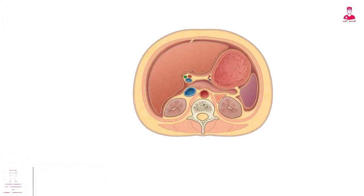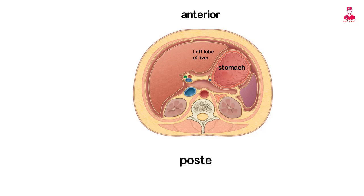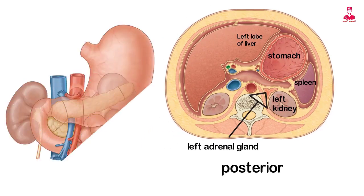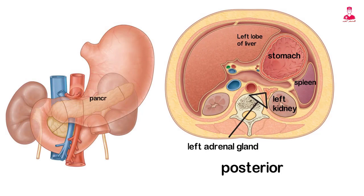The anterior surface is in contact with the diaphragm, anterior abdominal wall, and left lobe of the liver. Located posterior to the stomach are the spleen, the left adrenal gland and kidney, and the body and tail of the pancreas.